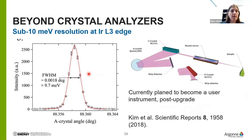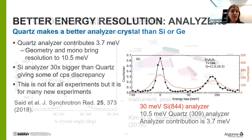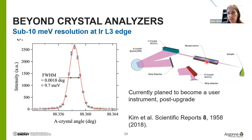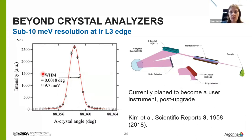Another option for post-sample analysis is to stop using diced crystal analyzers entirely. Jungho pioneered a practical application using a Montel mirror to collect solid angle and then flat crystals to perform energy analysis. This system is a whole talk in itself, and Jungho is much more qualified to give it, but they did get just below 10 meV with it. This is currently planned to become a user instrument after the upgrade, but significant mechanical changes are needed to make it practical.